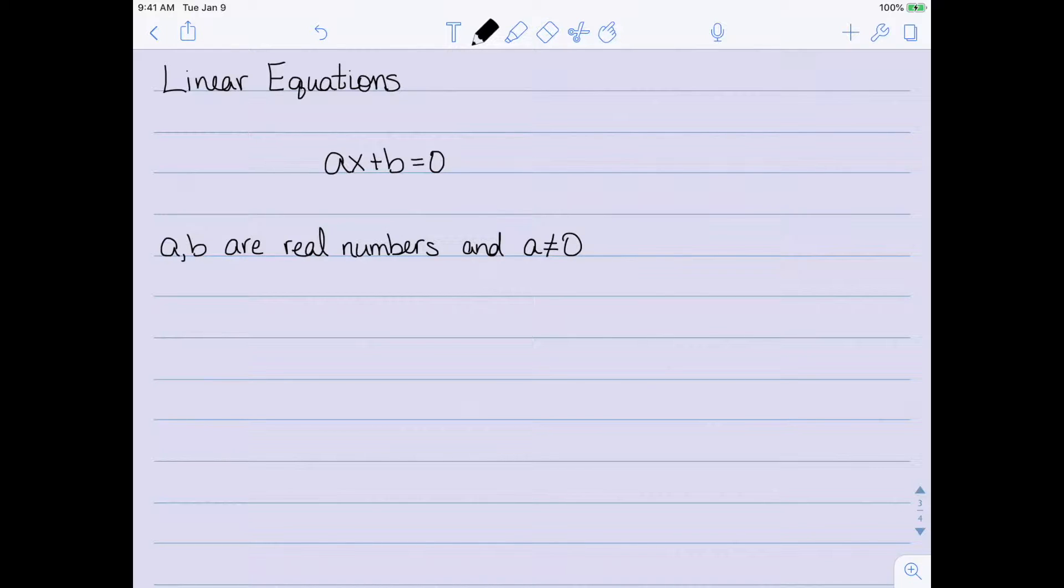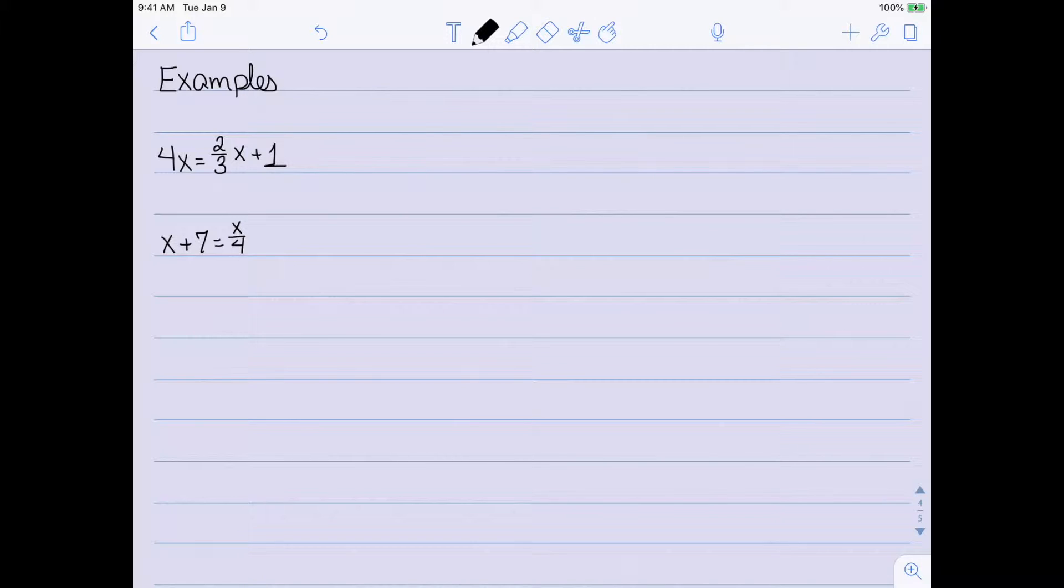Let's look at some examples of things that are linear as well as some things that are not linear. Here's the first thing that we have that is linear: 4x equals two-thirds x plus 1. x plus 7 equals x over 4, that's another example of a linear equation. 3x plus 7 equals negative 2 is another example of a linear.